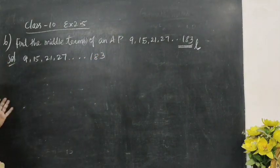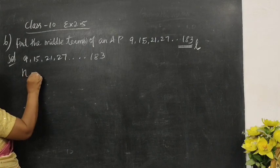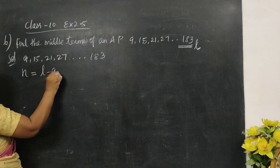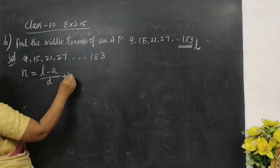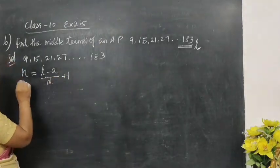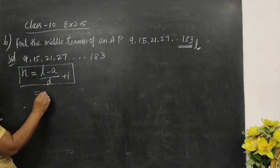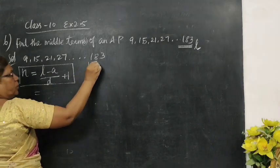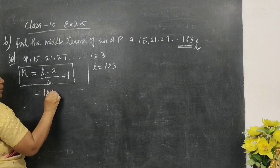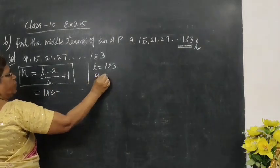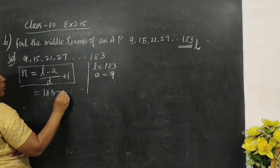How many number of terms do you know? So, first of all, you want to find it. So, n equals to formula, L minus A by d plus 1. To find number of terms, n equals L minus A by d plus 1. L is the last term. L is 183. So, 183 minus A is the first term. A equals 9.